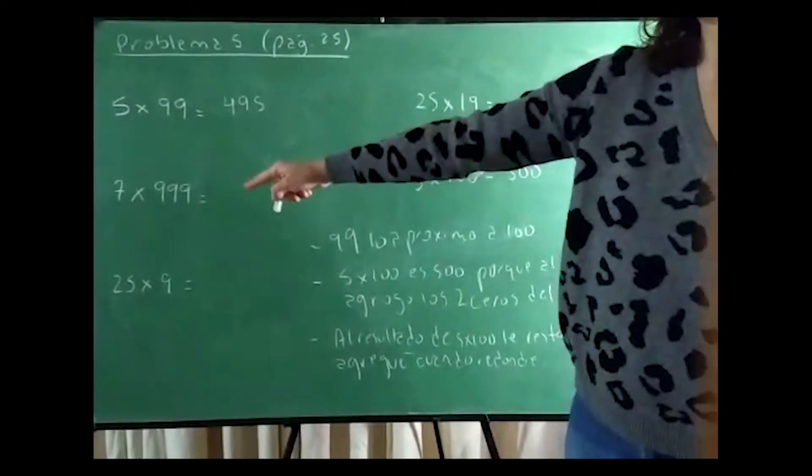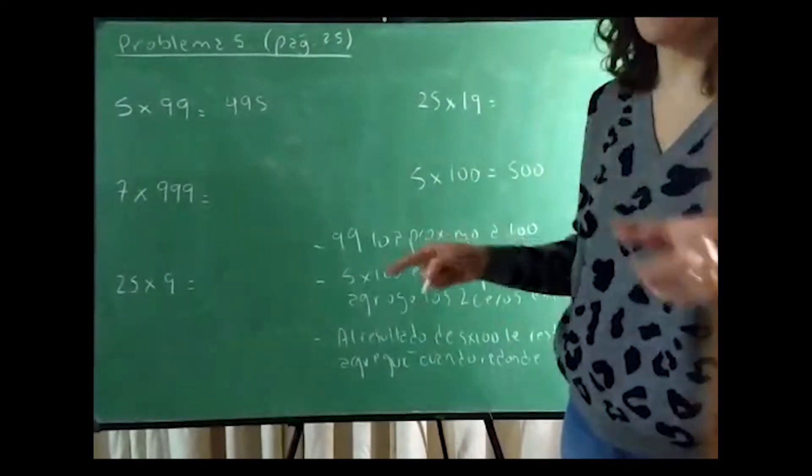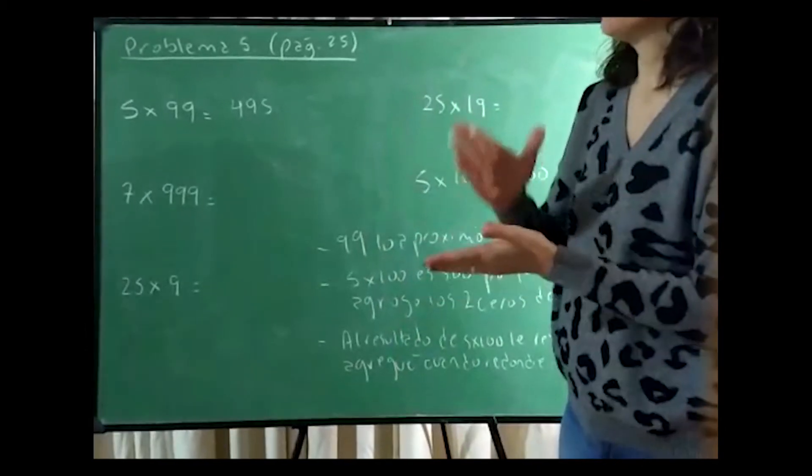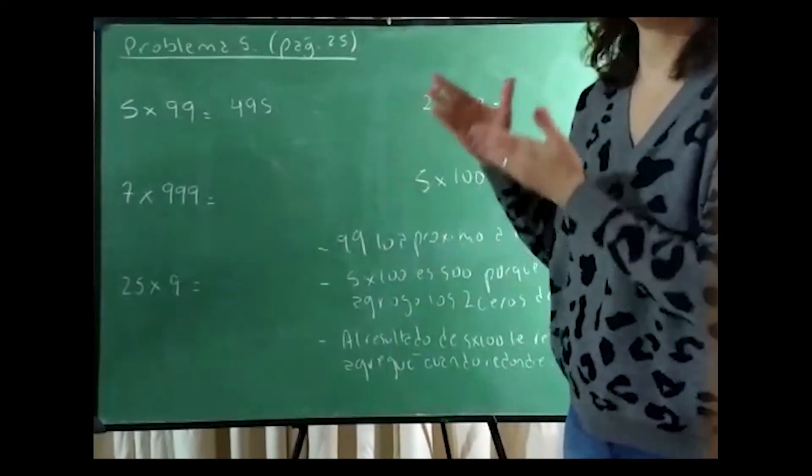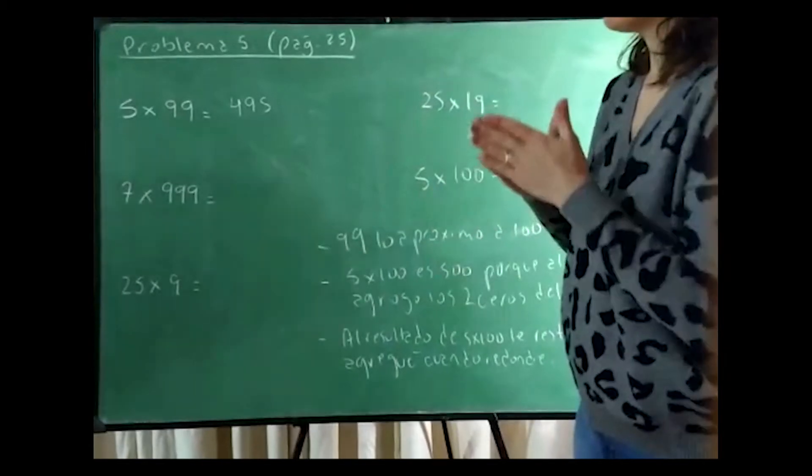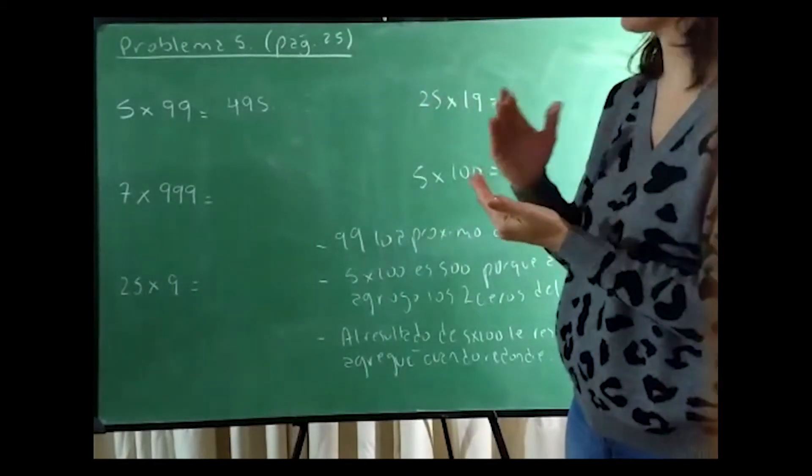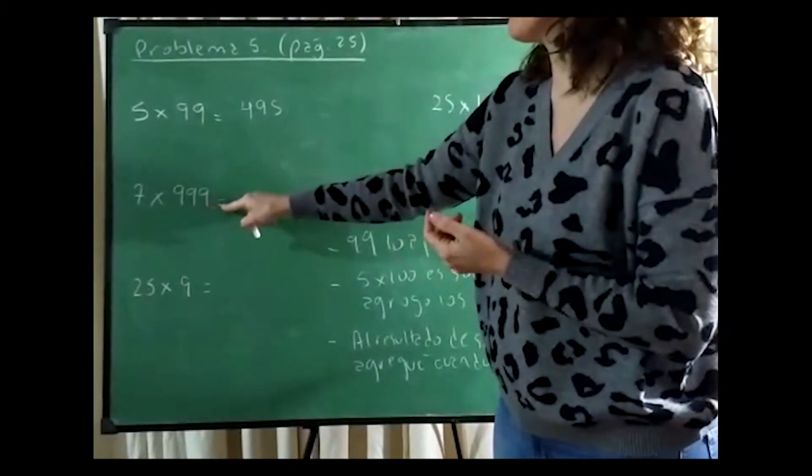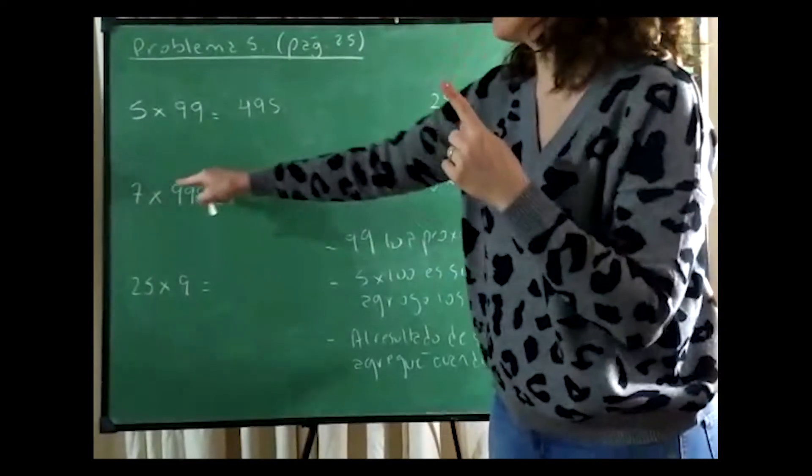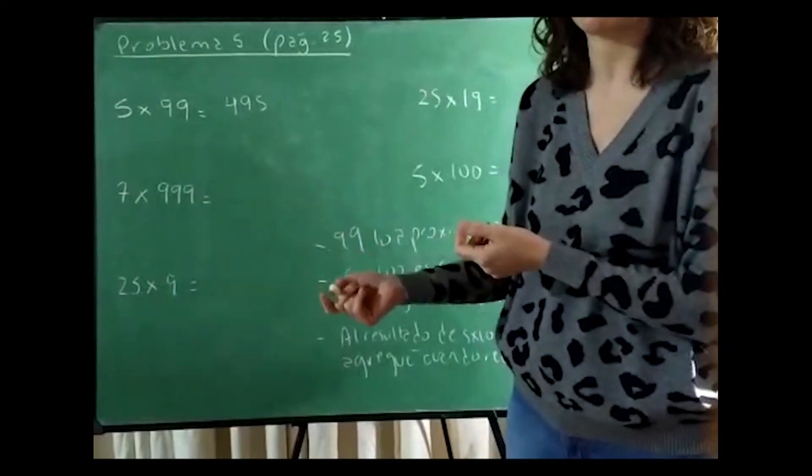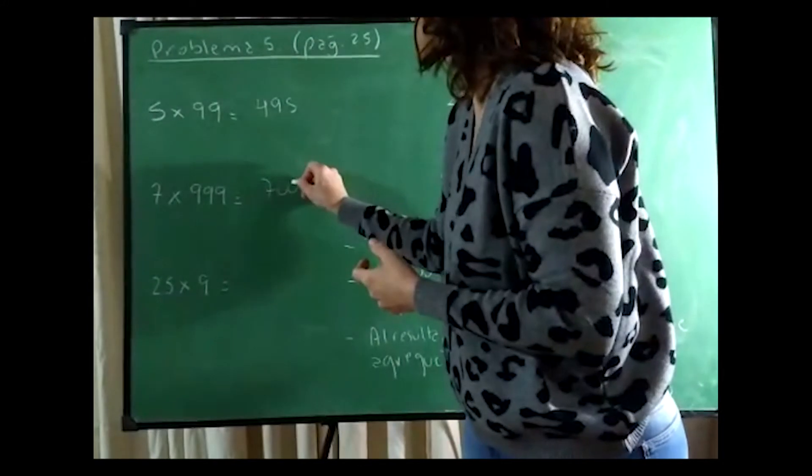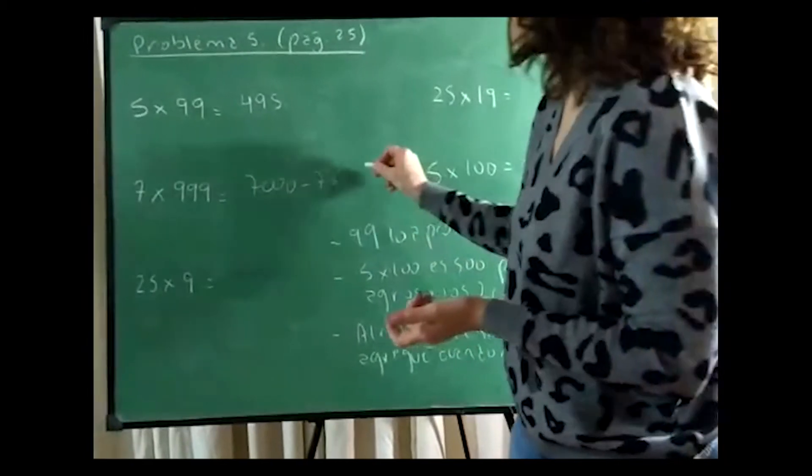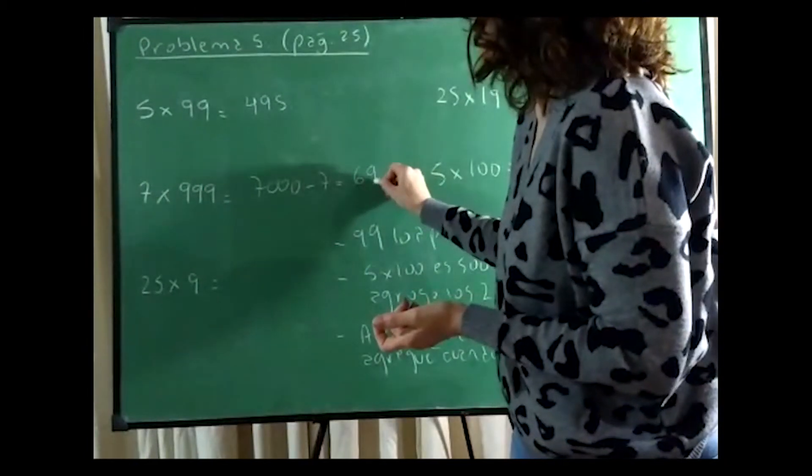The same we are going to do with the next one. 7×999, no, is 7×1000. 7×1000 is 7000 because I add the 3 zeros of 1000. So will it give me 7000? No, it gives me less than 7000 because I rounded it to one more. To make 999 into 1000 I added 1. If I multiply by 7 I added 7. So this will be equivalent to 7000 minus 7, and this calculation I can do mentally. I know this will give me 6993.